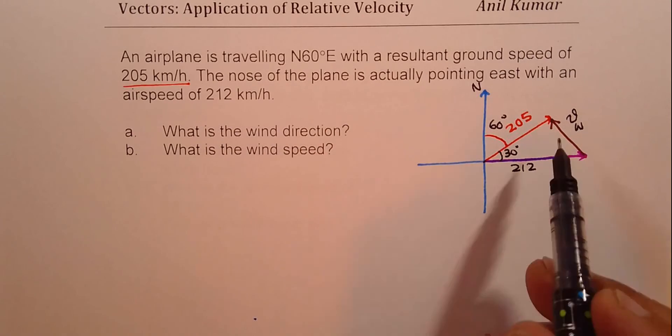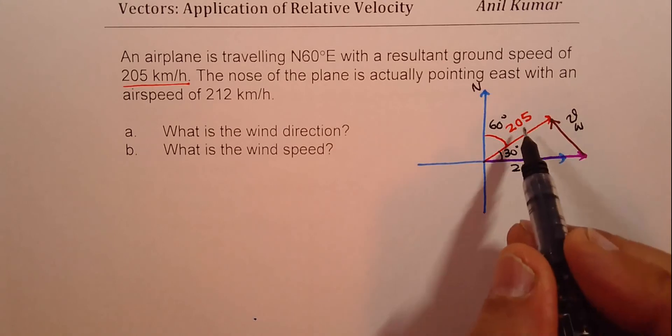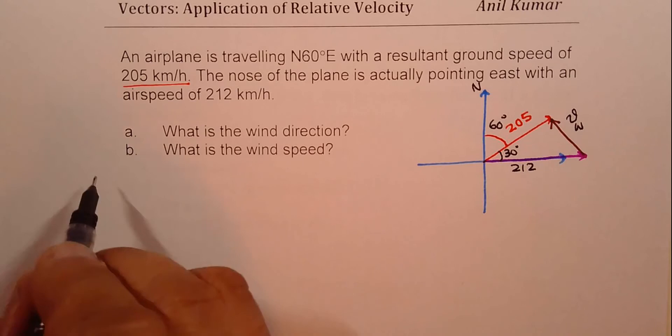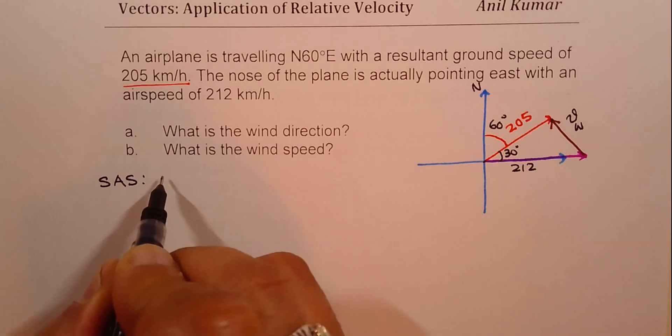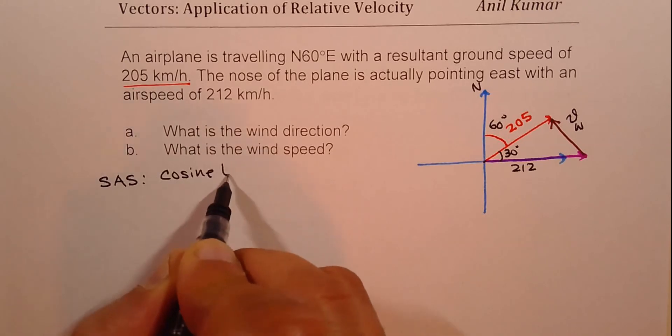So what do you see here is a right triangle where two sides and an angle included is given. So what we have here is side, angle, side. And that means you can apply cosine law. Is that clear?